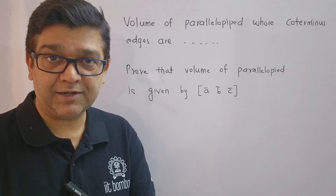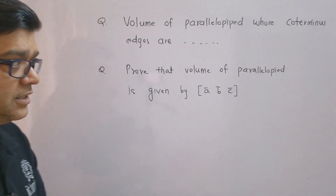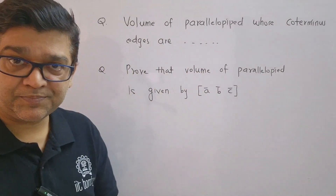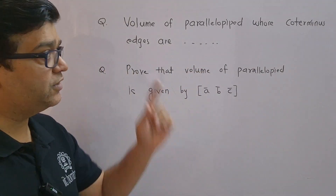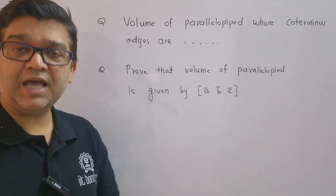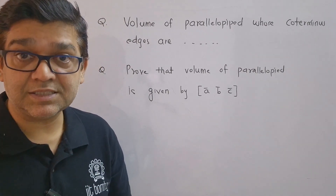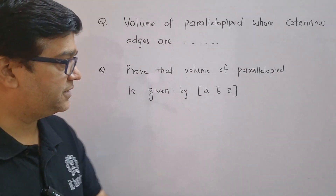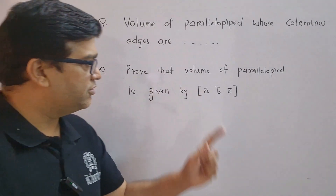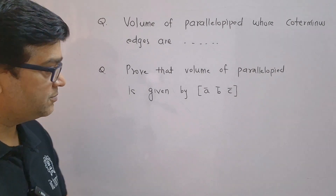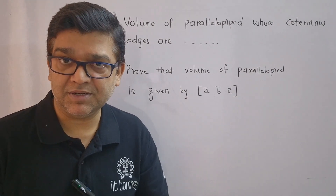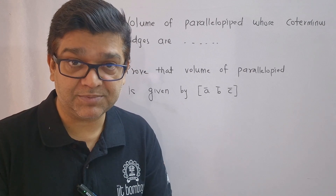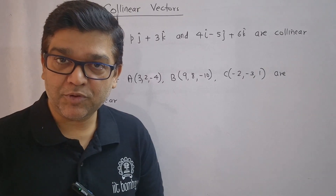They may ask you to find the volume of parallel piped and give you the co-terminus edges. Sometimes they might give you coordinates of vertices. There may also be a theory question — the most expected being: prove that the volume of parallel piped is given by the box product of a-bar, b-bar, and c-bar, where a-bar, b-bar, c-bar represent the co-terminus edges of the parallel piped.